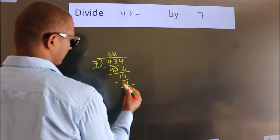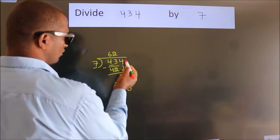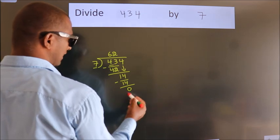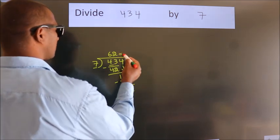Now we subtract, we get 0. After this, no more numbers to bring down. And we got remainder 0. So this is our quotient.